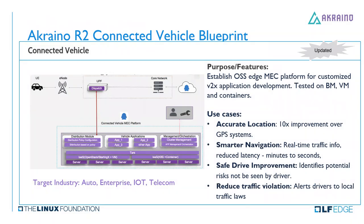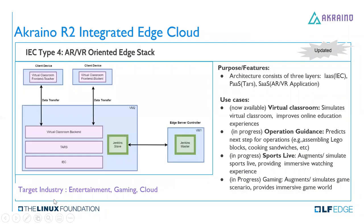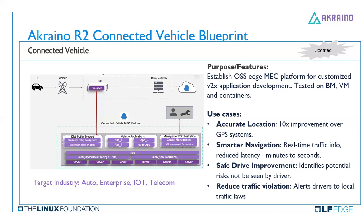For existing R1/R2 enhancements, the connected vehicle blueprint establishes an OSS Edge MEC platform for V2X application development. Use cases include accurate location — 10 times improvement over GPS — smarter navigation for real-time traffic info, and safe drive improvement with reduced traffic violations. The purple part is originally seed code from Tencent running on the TARS microservice framework, and contributors keep adding enhancements on top of it.